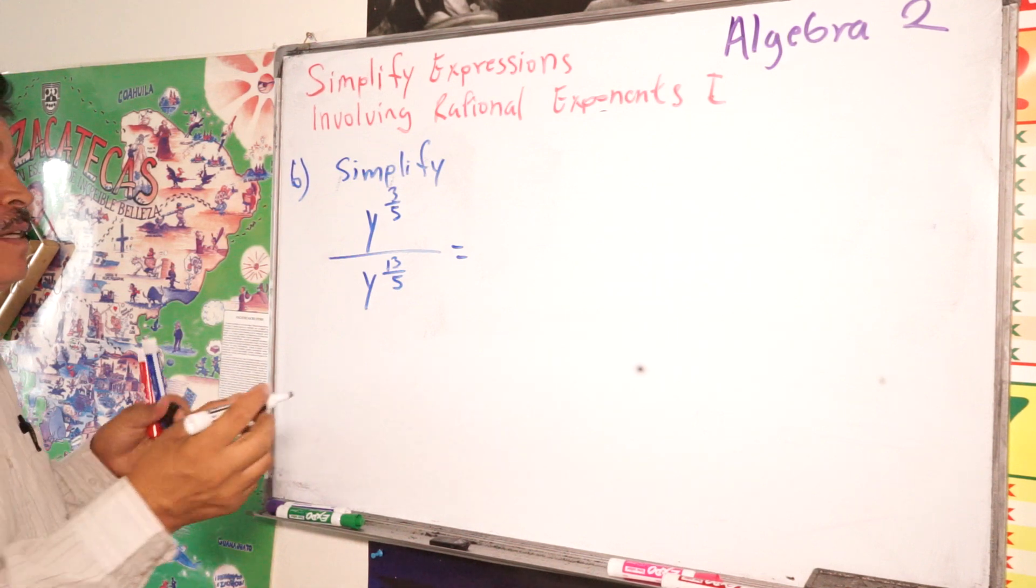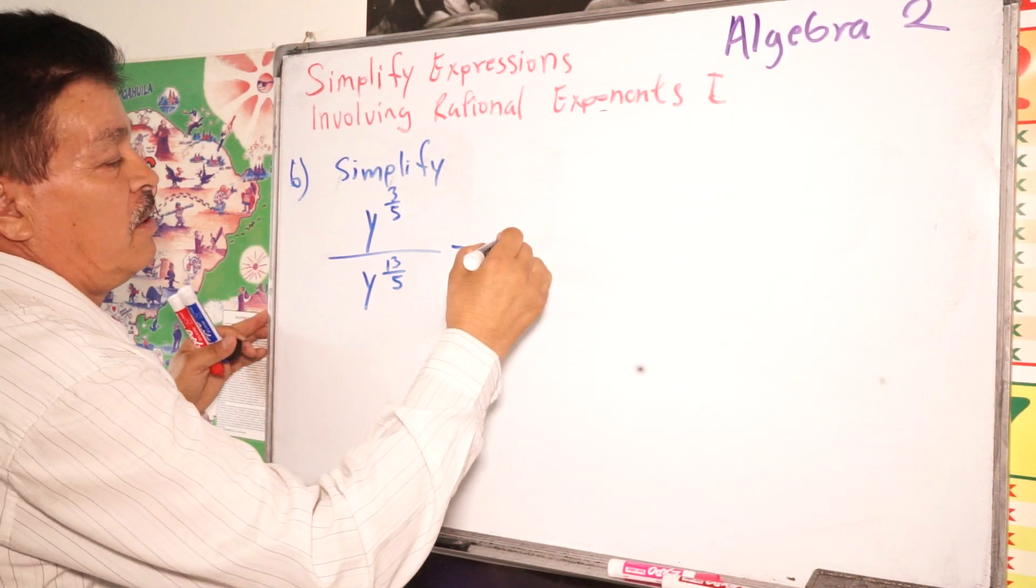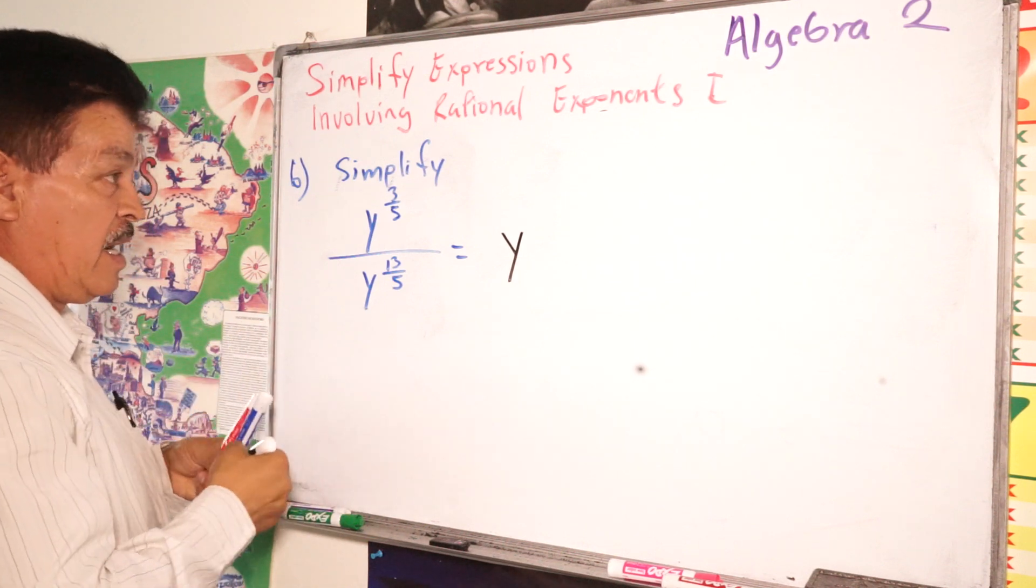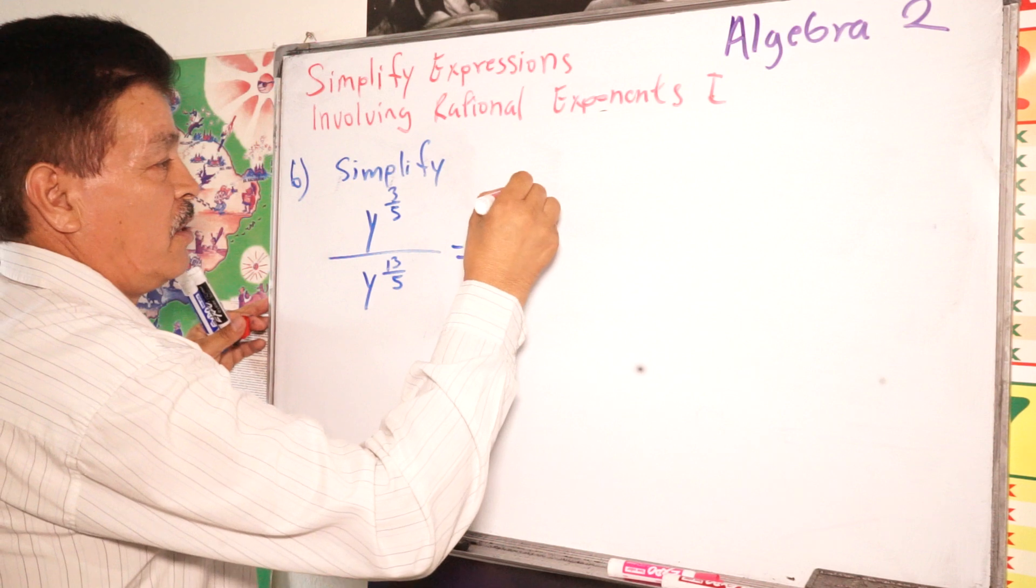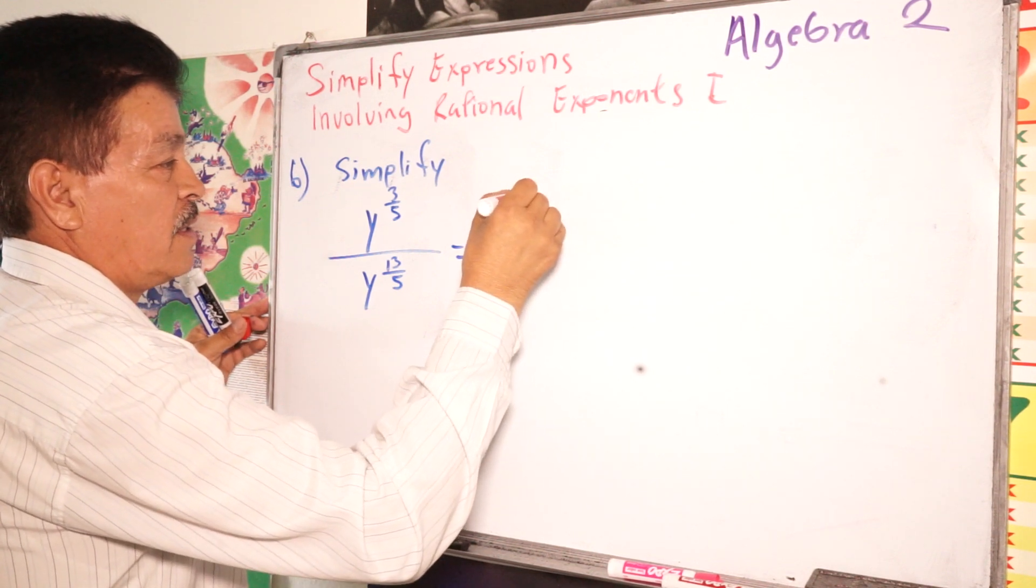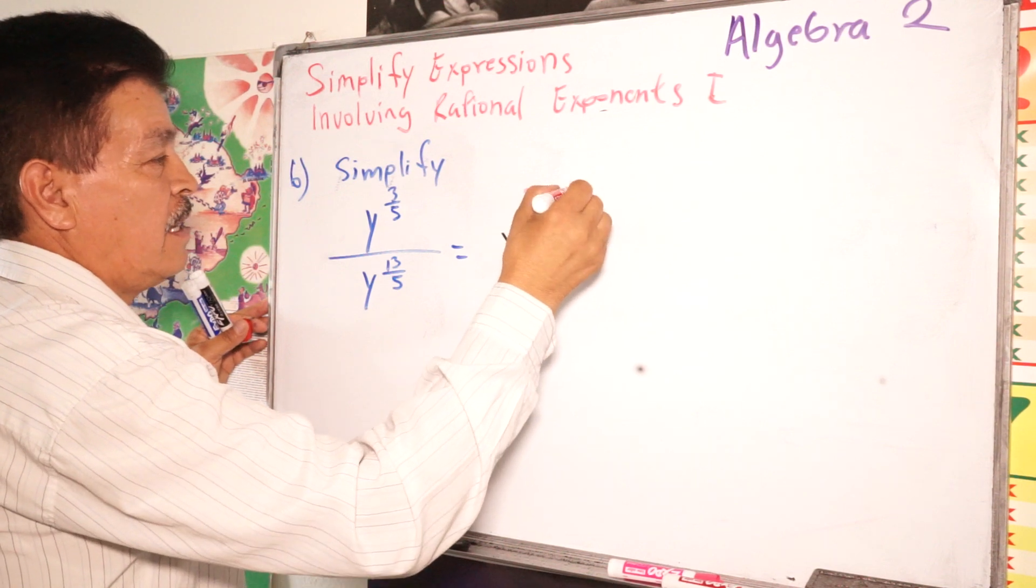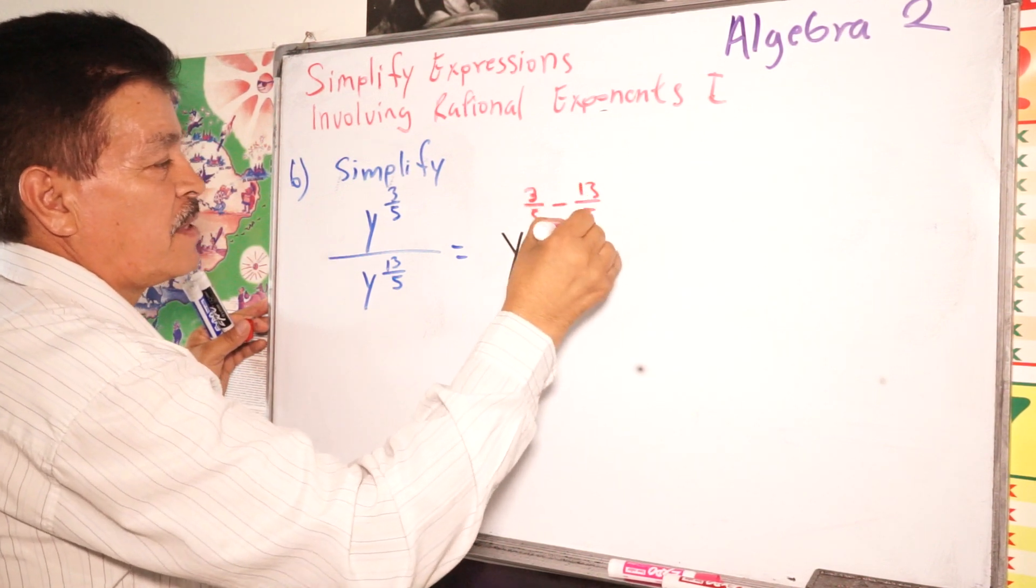This will be because Y. I told you the exponent, we have to subtract exponents. So to the third, to the fifth power, three fifths minus 13 fifths, right?